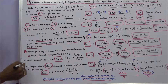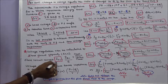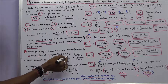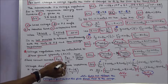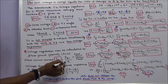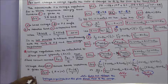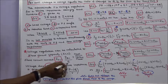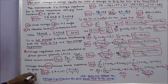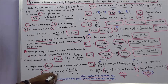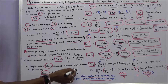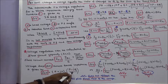We know that short circuit current ISC equals short circuit apparent power divided by sending-end voltage E. The voltage drop across the series impedance is given by: delta V equals (R + jX) multiplied by (P minus jQ) divided by V.